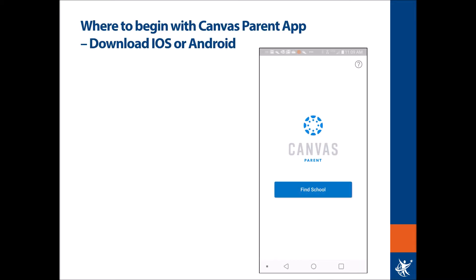Directions for your specific phone can be found linked to our parent university. You either download the iOS or the Android app, which can be found in the accompanying stores. Once you download the app, you will come across the Canvas Parent Find School option. Simply select the Find School button.